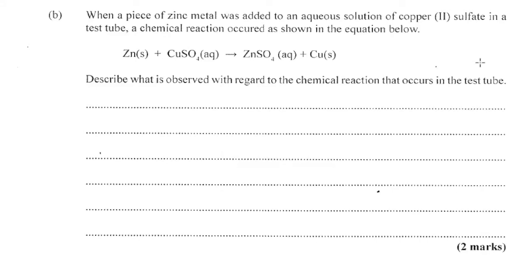Part B: when a piece of zinc metal was added to an aqueous solution of copper sulfate in a test tube, a chemical reaction occurred as shown in the equation: Zn(s) + CuSO₄(aq) → ZnSO₄(aq) + Cu(s). This is a displacement reaction, but redox is taking place — it's actually a redox process. We are asked to describe what is observed with regard to the chemical reaction in the test tube.